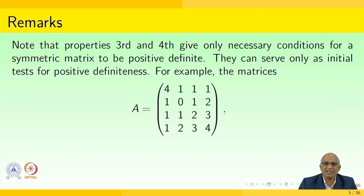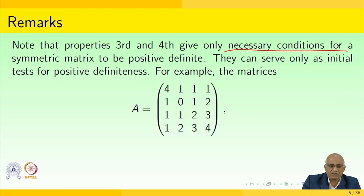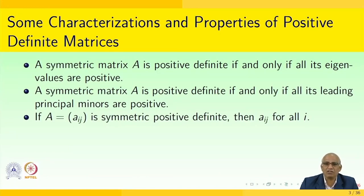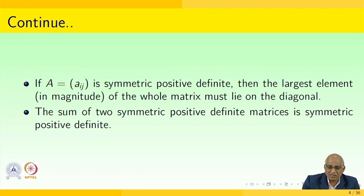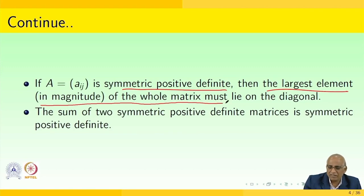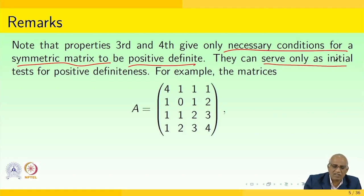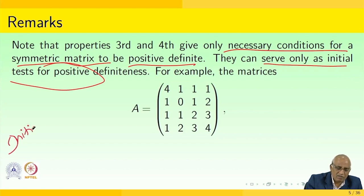Note that the properties exhibited in the 3rd and 4th conditions give only necessary conditions for a symmetric matrix to be positive definite. These two properties are actually necessary — they can serve only as an initial test for positive definiteness. They are not sufficient; they can only serve as an initial test.